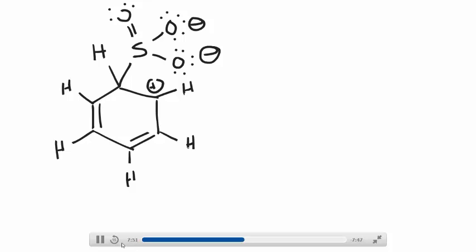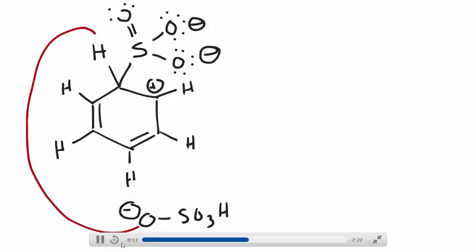And at this point in time, you need to remove a proton, so we're going to do that with the hydrogen sulfate anion, and I did not draw that in a very good location, but we have our hydrogen sulfate anion, and it will remove the proton on this sp3 hybridized carbon.